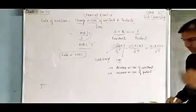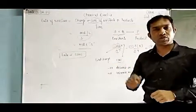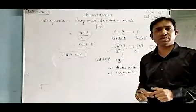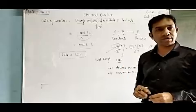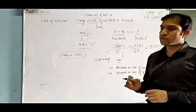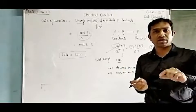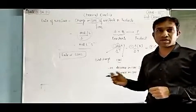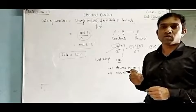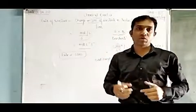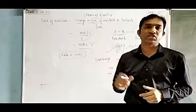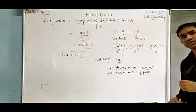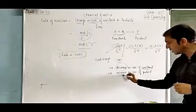Suppose we take an example. Whenever we want to burn a piece of paper, at the starting point the piece of paper and a burner are there. The piece of paper acts as a reactant. Whenever we put that piece of paper on the burner, it will be burned up and completely vanished. The product is ash. This example shows that the decrease in concentration of reactant takes place, as well as the increase in concentration of product.